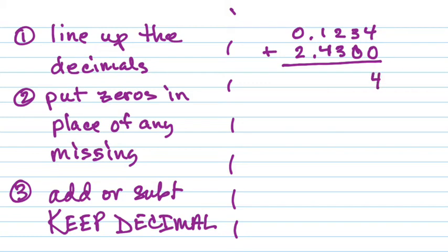4 plus 0 is 4, 3 plus 0 is 3, 2 plus 3 is 5, 4 plus 1 is 5. The decimal stays in the same place in your answer as it was in the beginning. 0 plus 2 is 2. So there's your completed answer with your decimal in it.